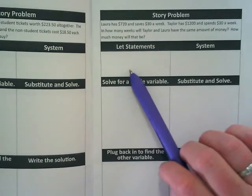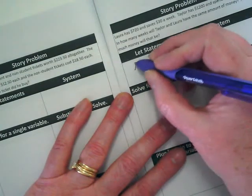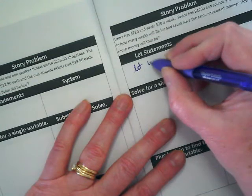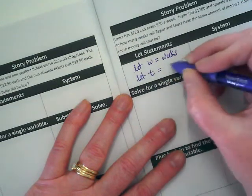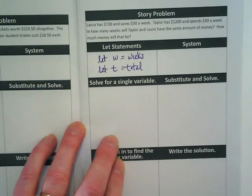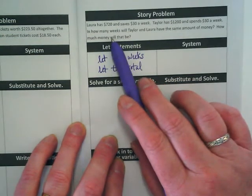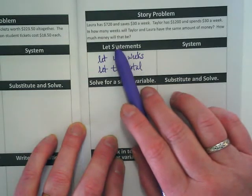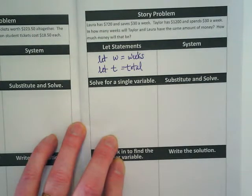The let statements is basically us setting up what the variable is. I'm going to make two variables for pretty much all of these problems. I'm going to let W equal weeks, and I'm going to let T equal total. My two variables are designed to answer those two questions — the number of weeks and how much money that will be.